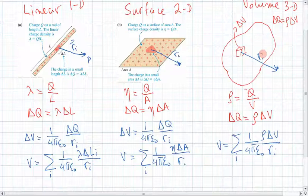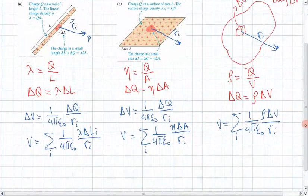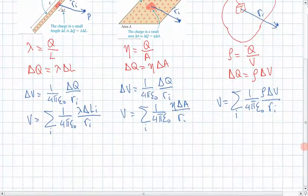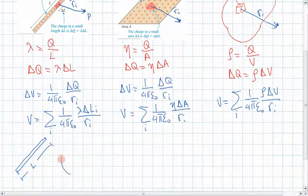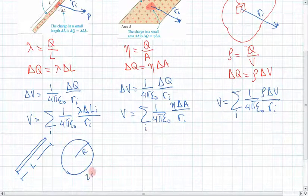This video reviews the concept of charge density. Let's see the types of objects where we use this. For one-dimensional objects, we typically have lines with length l, and rings. If this is the radius, a ring has a length of 2 pi r. So these are lines and rings.